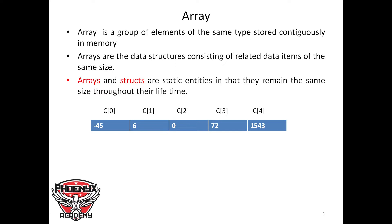Note that the index of the last element is always one number less than the size of the array. The size of the array is 5, but the index of the last element is 4 — that is, C[4]. Now let's see arrays in practice.